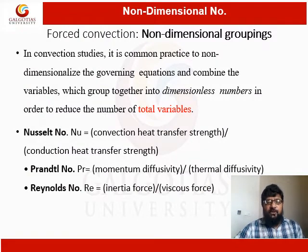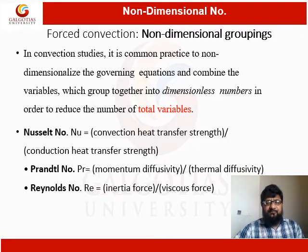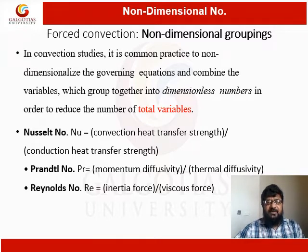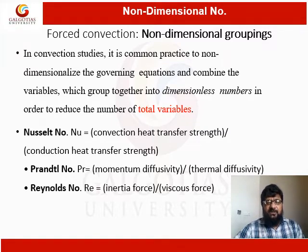Now we will talk about non-dimensional numbers. Non-dimensional numbers are very convenient in studying various phenomena. They reduce complexity by grouping dimensional quantities in such a way that the resulting group has no dimension — for example, the Nusselt number, Prandtl number, and Reynolds number. Often these non-dimensional numbers are the ratio of two important parameters occurring in heat transfer or fluid flow.